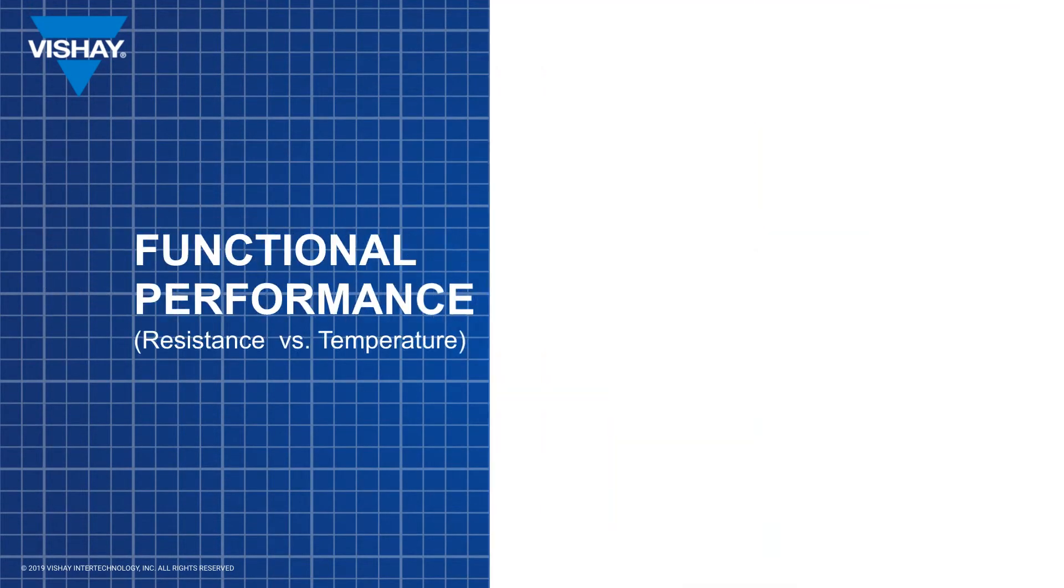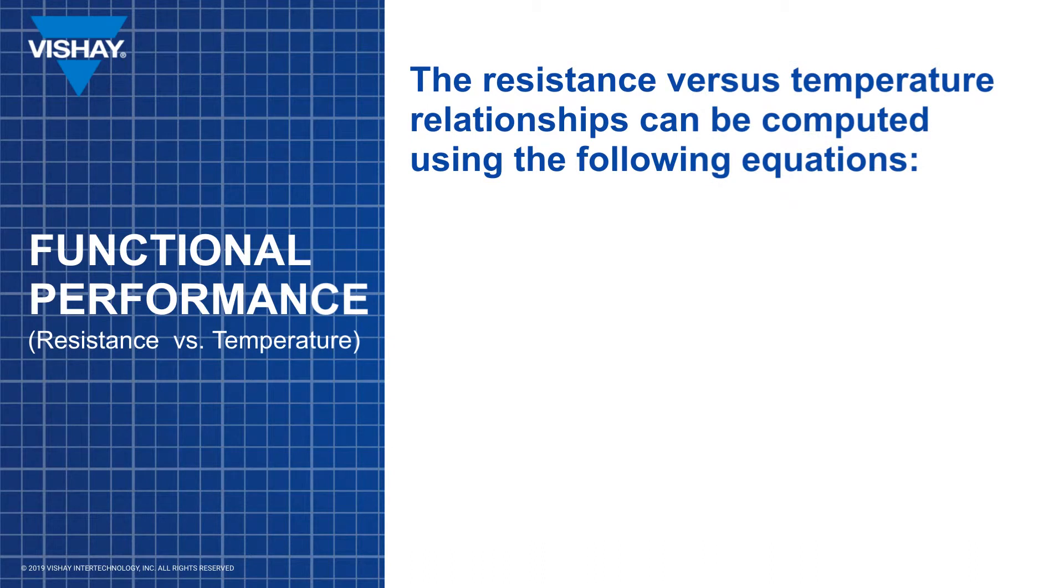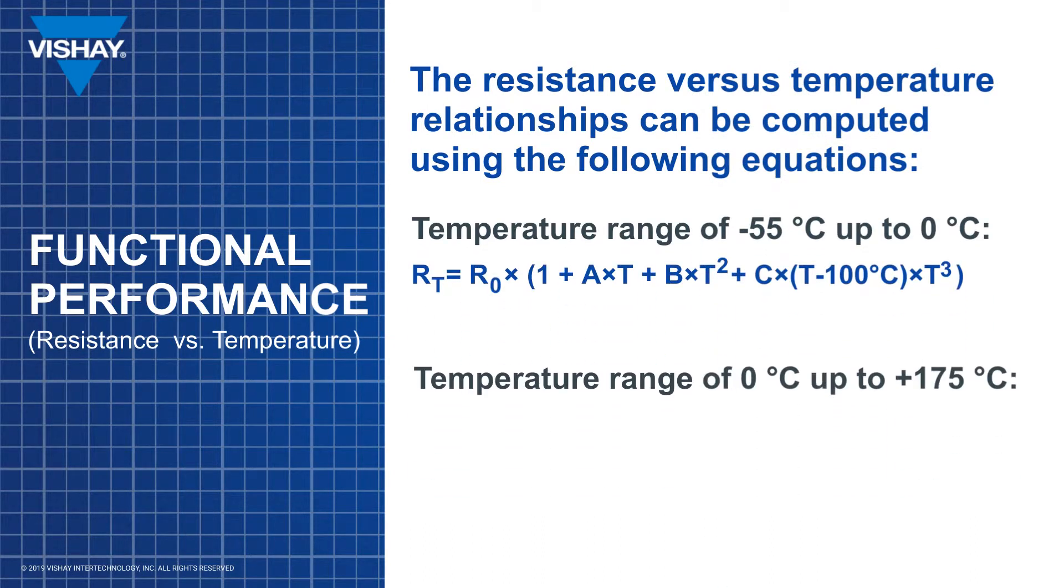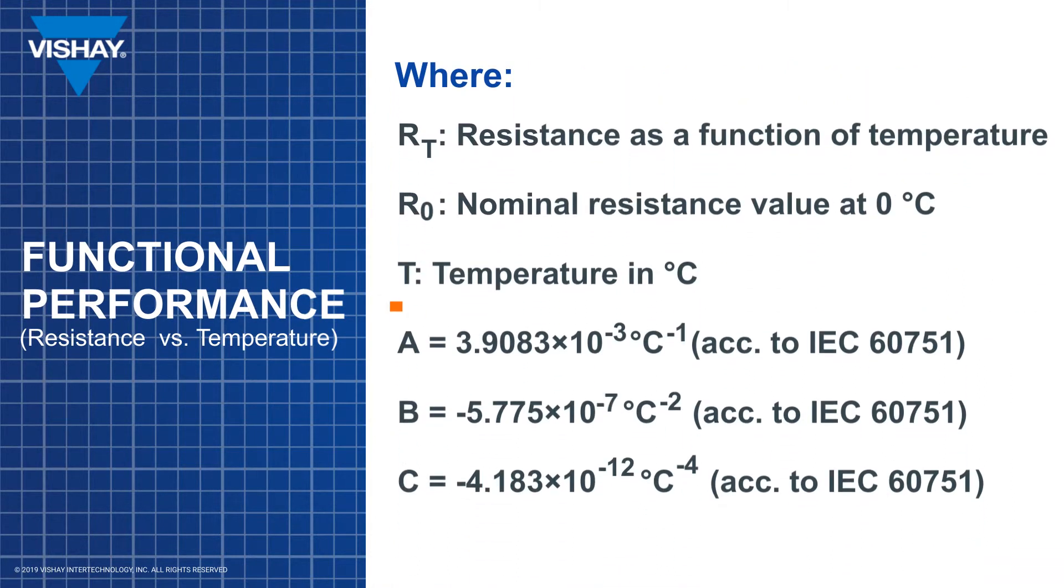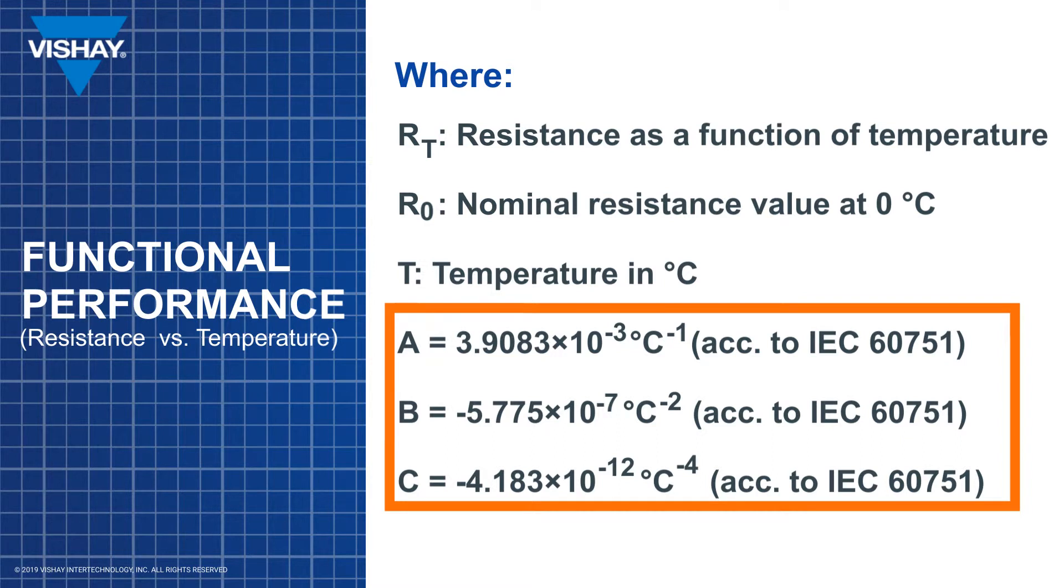The nearly linear resistance versus temperature relationship for the PTS-AT sensor shown above is accurately modeled using the set of equations outlined above with the known values that represent nominal resistance at 0 degrees C. A, B and C represent the Callendar van Dusen constants that are derived from actual resistance measurements in accordance with IEC 60751.